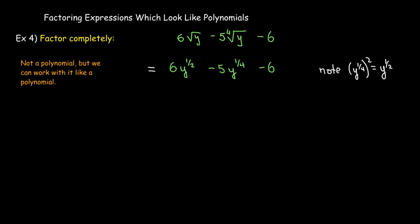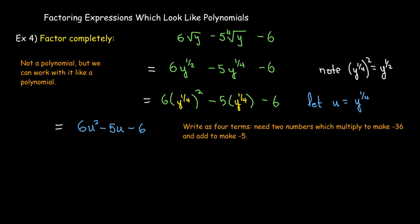And so now I'll go ahead and make a u substitution. I don't really necessarily have to make a u substitution. I could work with it with the y to the 1 fourth, but it just makes it simpler to write out if I replace y to the 1 fourth with the new variable u. So I'll have 6u squared minus 5u minus 6. I could use trial and error, but I'm going to go ahead and use grouping. I'm going to rewrite this as four terms.